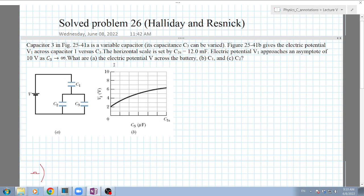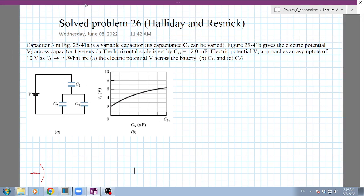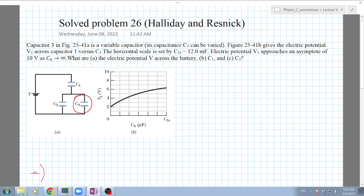Capacitor 3 is a variable capacitor. The capacitance is related to the voltage. This figure gives the electric potential V1 across capacitor 1, and the horizontal scale is set by C3s equals 12 microfarad.